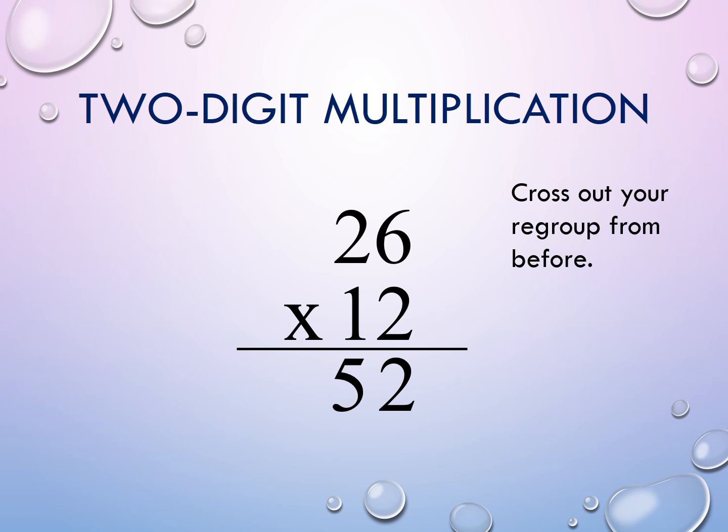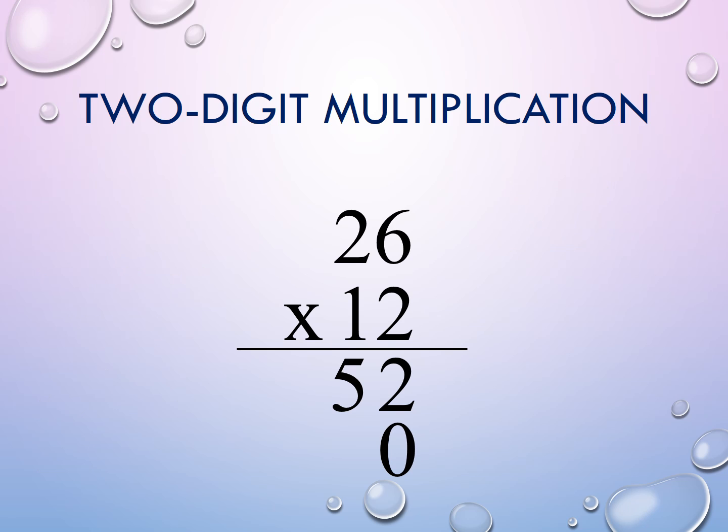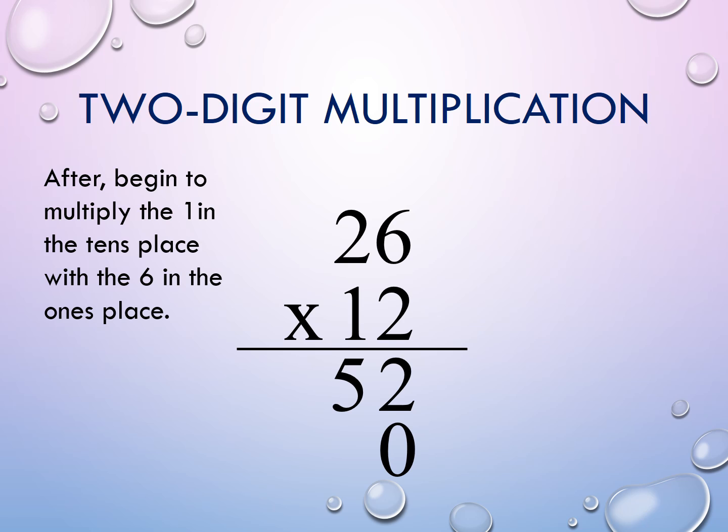Cross out your regroup from before. Because we are going to the 10's place value, we need to use a magic 0 for a placeholder. Place the 0 under the 2 in the 1's place. After, begin to multiply the 1 in the 10's place with the 6 in the 1's place. Think, 1 times 6 equals 6.